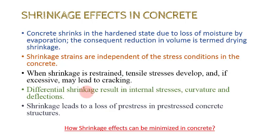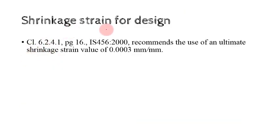Differential shrinkage due to moisture or thermal gradient, or due to differential restraint to shrinkage—for example, by unsymmetrically placing reinforcement in a beam—will result in internal stresses, curvature, and deflection. Shrinkage also leads to a loss of pre-stress in pre-stressed concrete structures. How can shrinkage effects be minimized in concrete? Since the primary cause of shrinkage is moisture loss from the cement-based phase of the concrete, it can be minimized by keeping the unit water content in the mix as low as possible and the total aggregate content as high as possible.